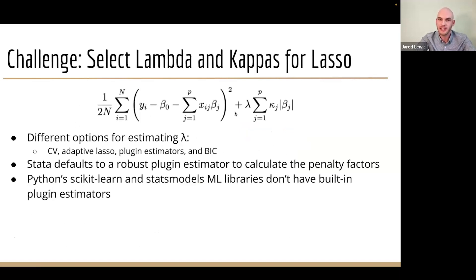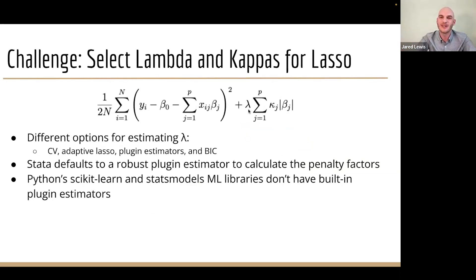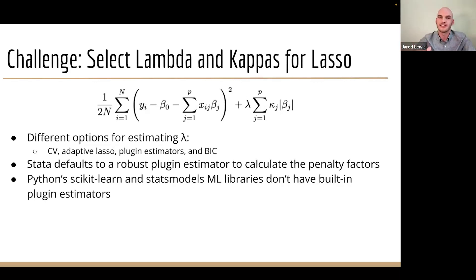There are different options for estimating lambda: cross-validation, adaptive lasso, plug-in estimators, or Bayes information criterion. The larger your penalty term, the more it affects how many of your coefficients get chosen by the model. We used a plug-in estimator based on advanced theoretical results. It results in the most parsimonious model — the fewest variables — making it easier to interpret and great for statistical analysis, whereas cross-validation might be better for making predictions.